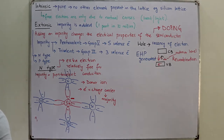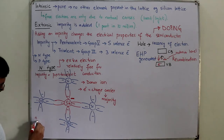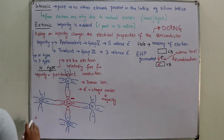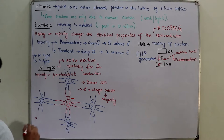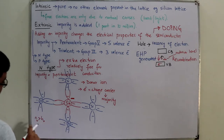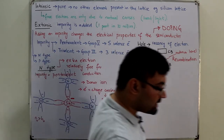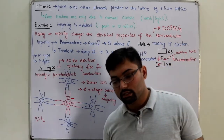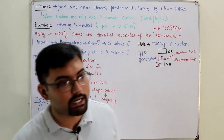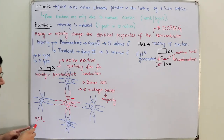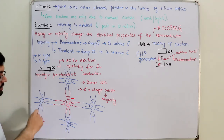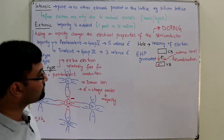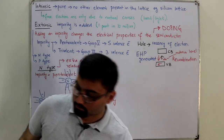In n-type material, the electron concentration (n₀) is greater than the hole concentration (h₀). Concentration refers to the number of charge carriers present per unit volume. In n-type, the number of electrons per unit volume is greater than the number of holes per unit volume.